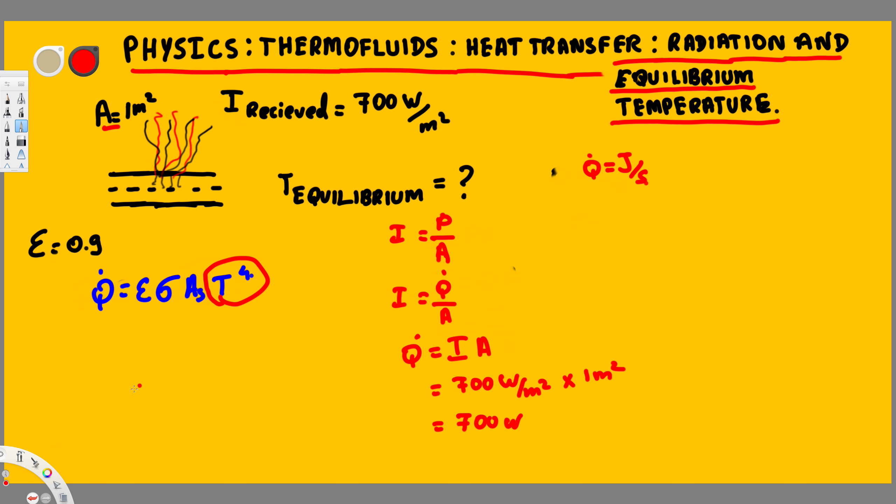Now let's rearrange this equation. Q dot equals epsilon sigma A T to the power 4. T to the power 4 is going to be equivalent to Q dot over epsilon sigma surface area, and therefore T is going to be equivalent to the fourth root of Q dot over epsilon sigma A S.